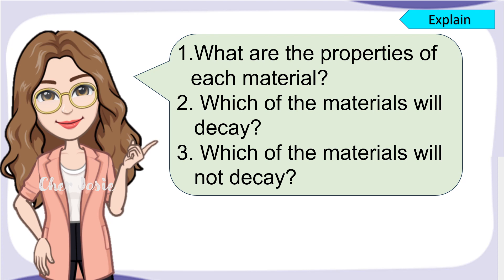For Number 2, which of these materials will decay? You're right! We have leftover food, banana peel, calamansi, onion, and tomato. What about the materials that are non-decaying? You're right! We have plastic bottle, plastic bottle of alcohol, plastic gloves, and face mask.